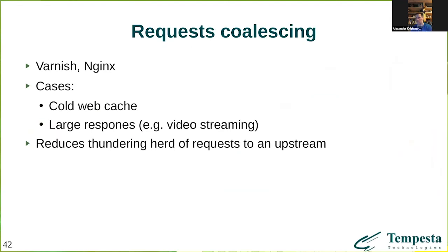The next point is request coalescing. Consider that an HTTP proxy receives 100 HTTP requests to the same URL. A naive proxy will forward all requests to the upstream server if it doesn't have the resource in cache. However, Varnish, Nginx, and Tempesta FW — which will also support this in the next version — are able to coalesce all requests. If the proxy sees 100 requests to the same resource, it sends only one request to the upstream server, suspends the other 99, and when the response comes from upstream, sends it to all 100 requests.